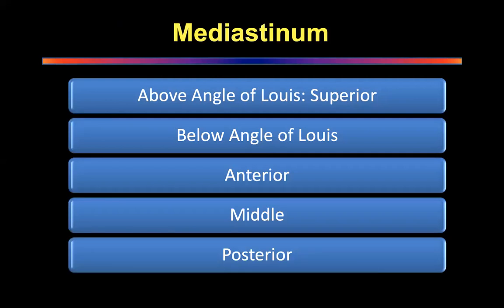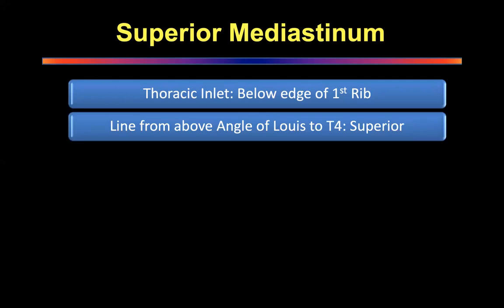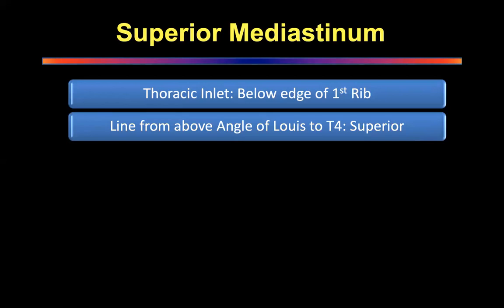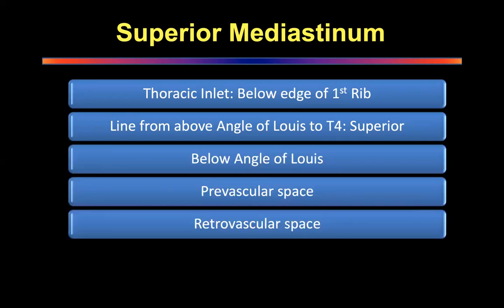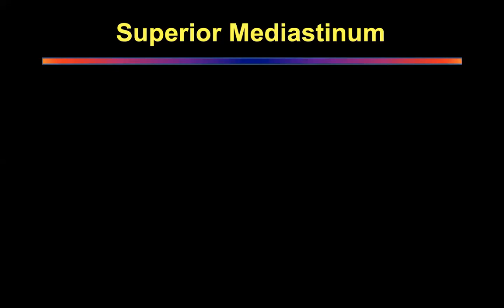Above is superior, below is the inferior division. The inlet is below the edge of the first rib. The dividing line is the angle of Louis to T4 — specifically the inferior border of T4. The three compartment names to use are: prevascular space, retrovascular space, and periferingo-esophageal space — these correspond to anterior, middle, and posterior mediastinum respectively.